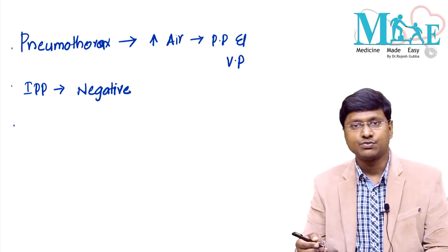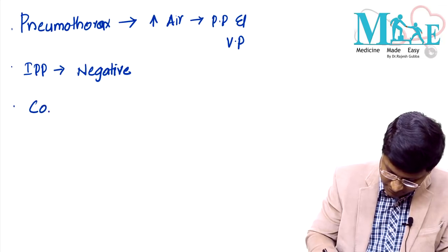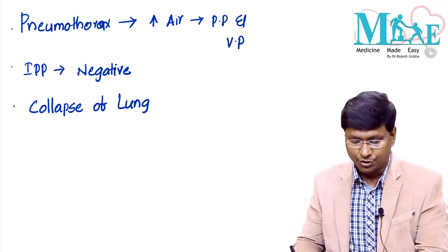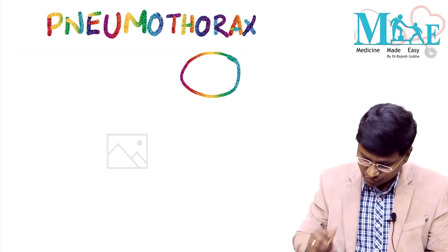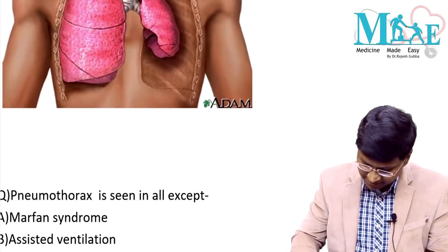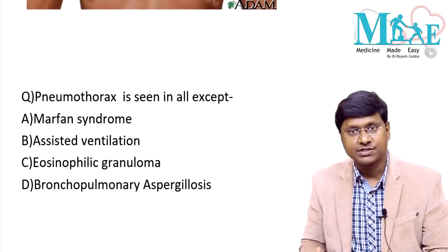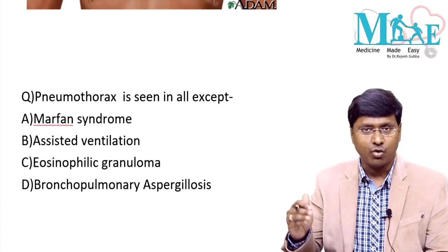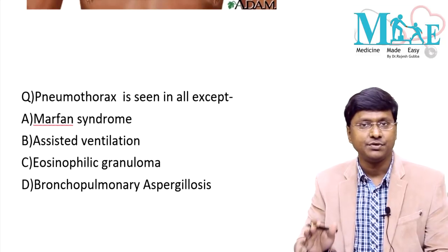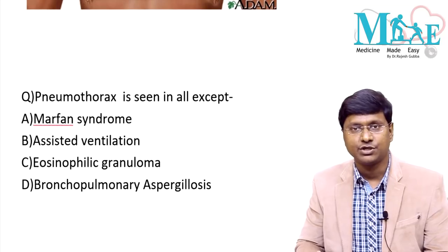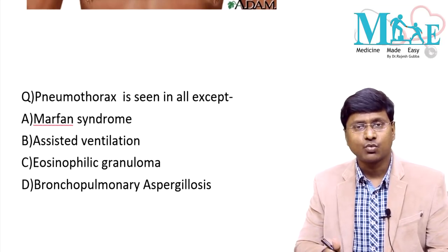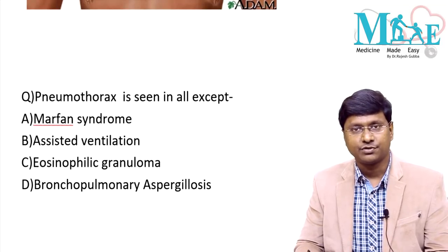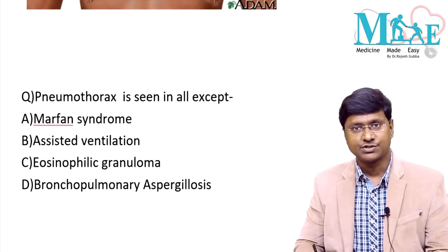Once there is positive pleural pressure, the lungs will not expand, resulting in the collapse of the lung — which is the hallmark feature of pneumothorax. Now let me discuss the etiology. I will cover etiology, clinical features, examination findings, diagnosis, and treatment of pneumothorax under the following headings.